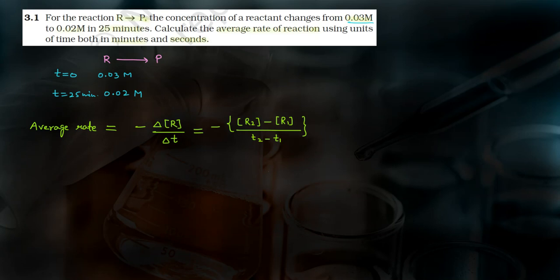Now let's look at the question. At T equals to 0, this is time T1. At T1, the initial concentration was 0.03 M — this is R1. At T equals to 25 minutes, this is time T2. The concentration of the reactant at this time is 0.02 M — that is R2. Now we have to put all these values into the formula.